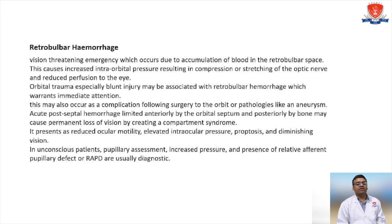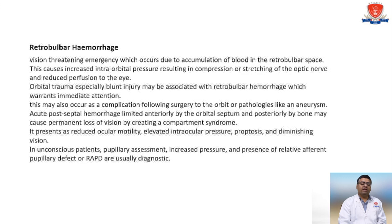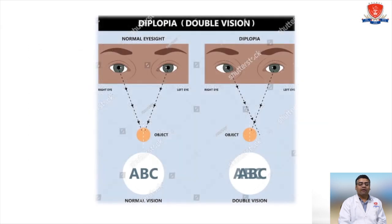Retrobulbar hemorrhage is a vision-threatening emergency which occurs due to accumulation of blood in the retrobulbar space. This causes increased intraorbital pressure resulting in compression or stretching of the optic nerve and reduced perfusion to the eye. Orbital trauma, especially blunt injury, may be associated with retrobulbar hemorrhage, which warrants immediate attention. In unconscious patients, pupillary assessment and presence of a relative afferent pupillary defect are important diagnostic tools. It presents as reduced ocular motility, elevated intraocular pressure, proptosis, and diminishing vision. Diplopia, or double vision, may also occur.